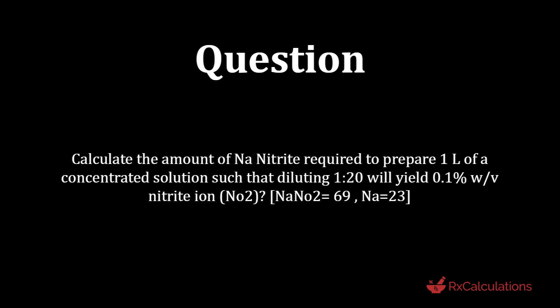The first question says: calculate the amount of sodium nitrite required to prepare one liter of a concentrated solution such that diluting it 1 to 20 will yield 0.1 percent weight by volume nitrite ion. The molecular weight of sodium nitrite is 69 and the atomic weight of sodium is 23.